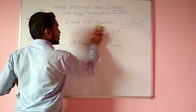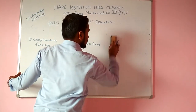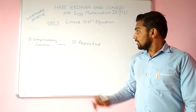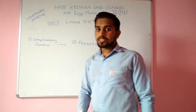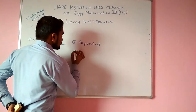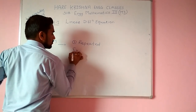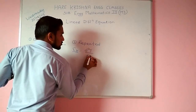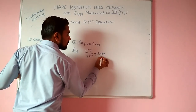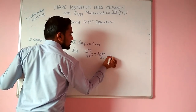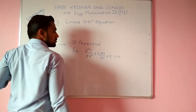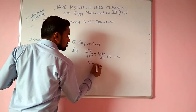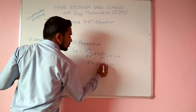Today's discussion: we just take one example for our understanding. Example: d²y/dx² + 2·dy/dx + y = 0. Now we put this as (D² + 2D + 1) = 0.